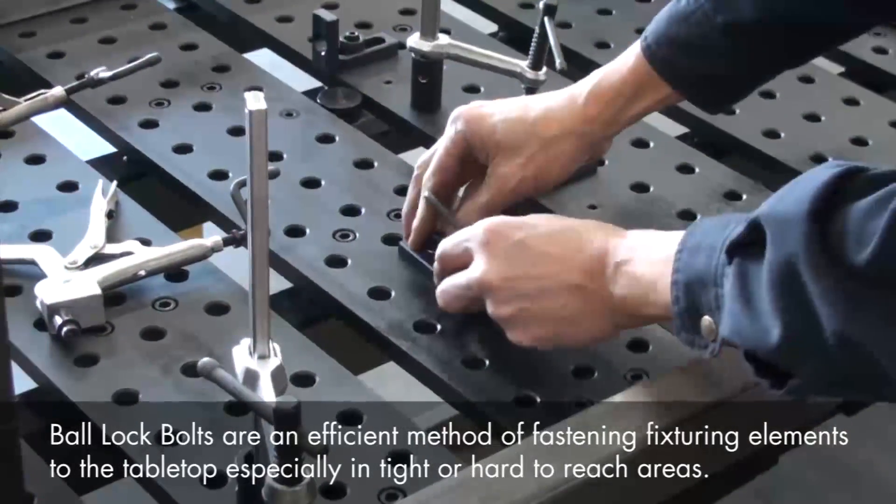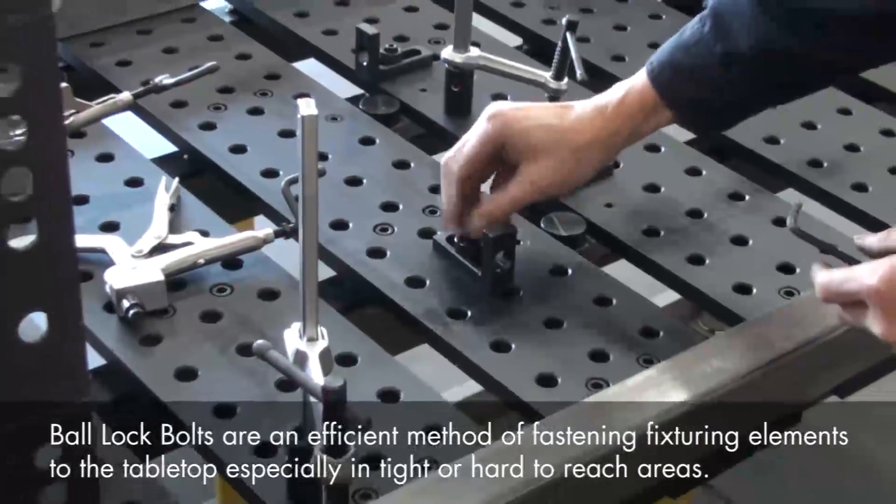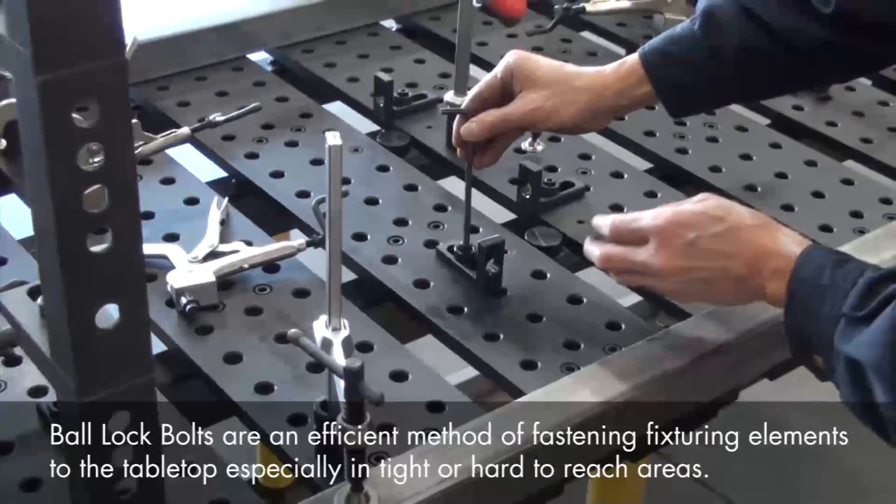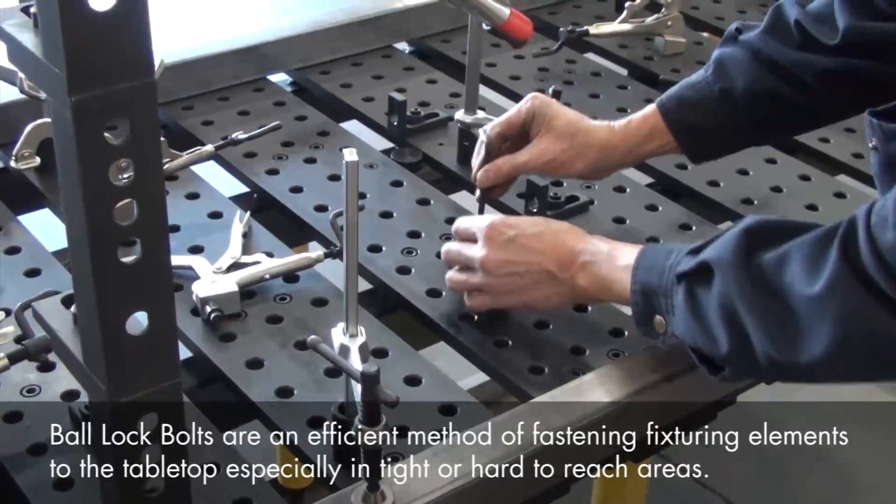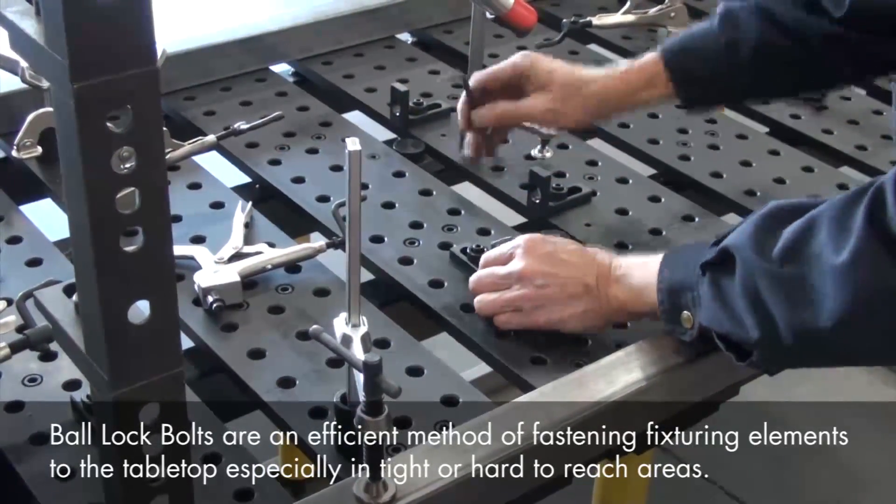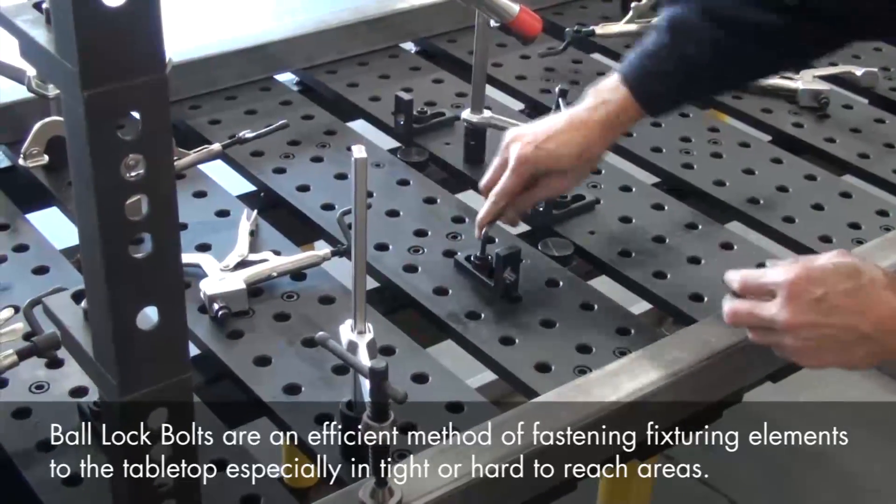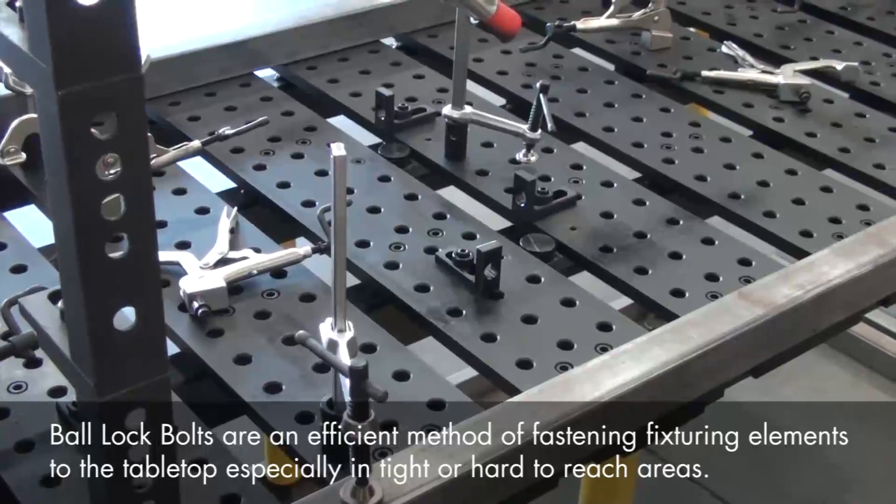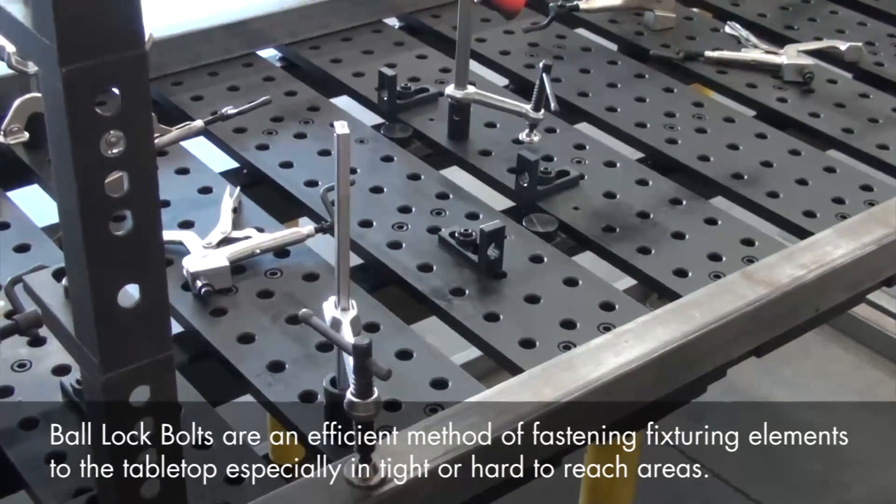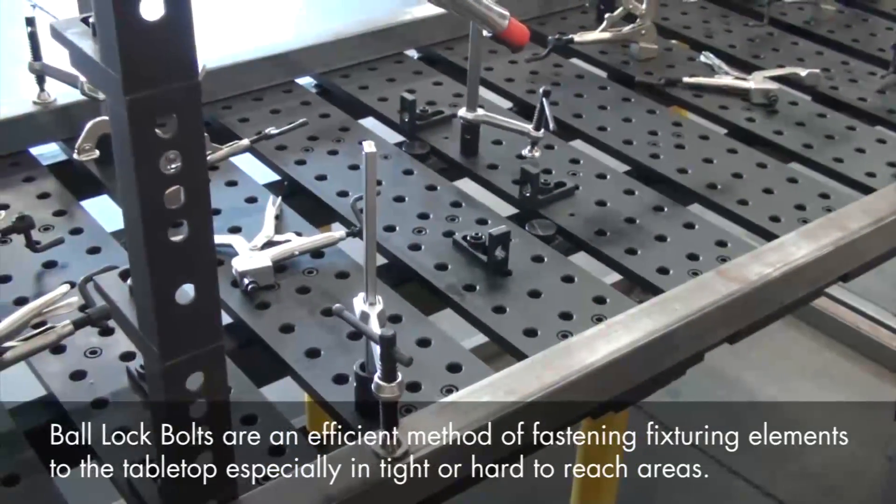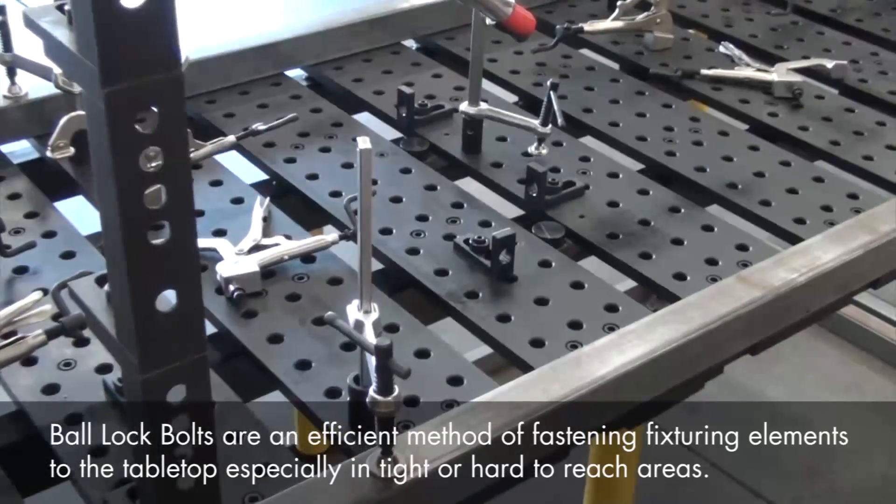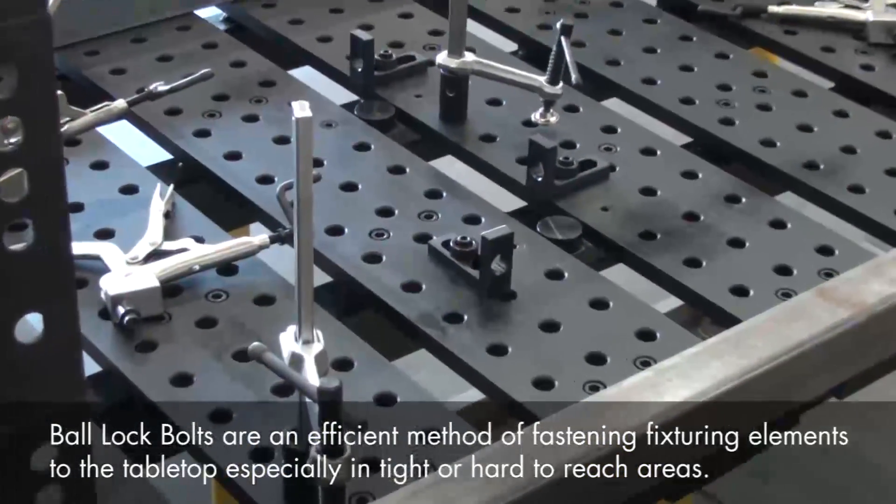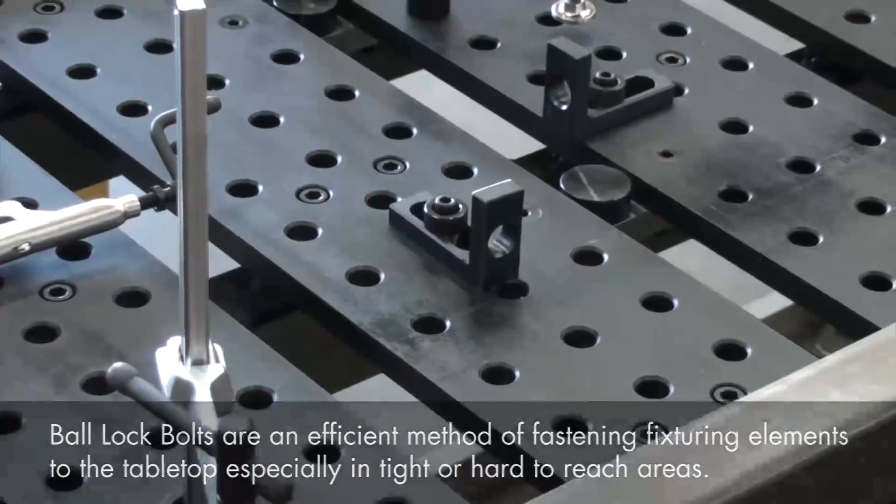We just drop the bolts in place, and as we tighten them down, three locking steel balls in the shaft will move outward and engage underneath the plate and give us a good solid hold, which is a real time-saver because we don't have to reach underneath the table to tighten the bolt. In hard-to-reach areas like this, the ball-lock bolts are a fast and very handy method of locating and fastening clamps and components to the table.